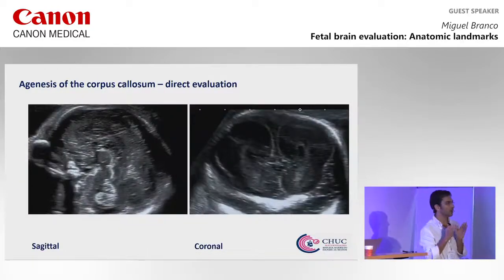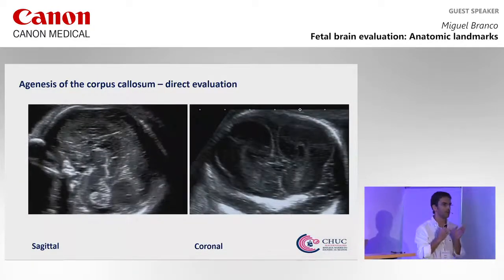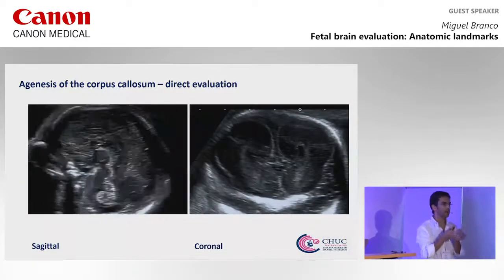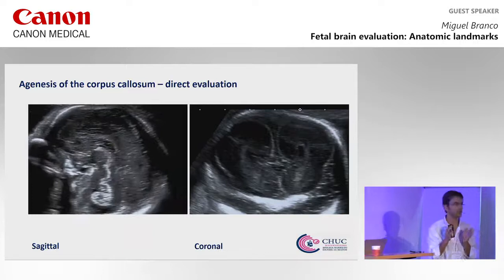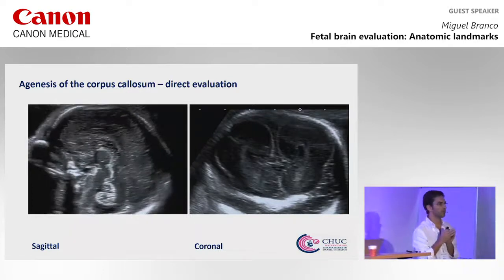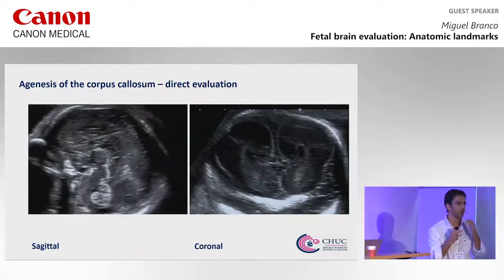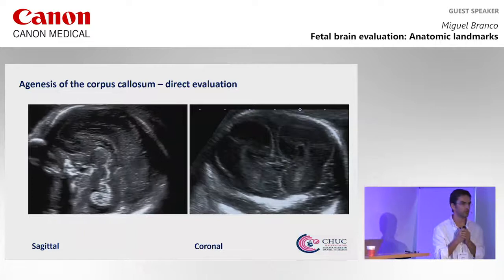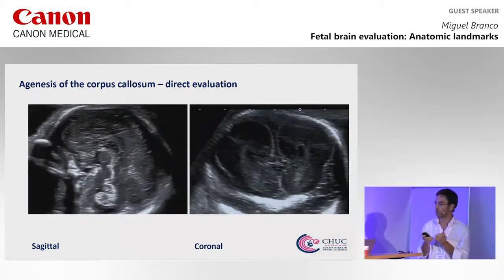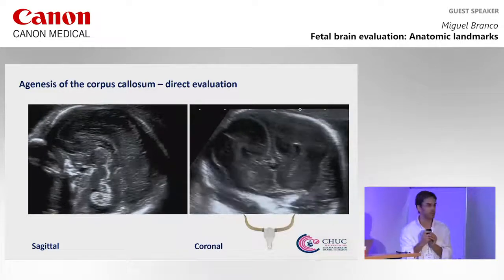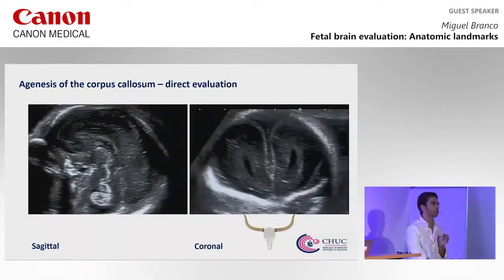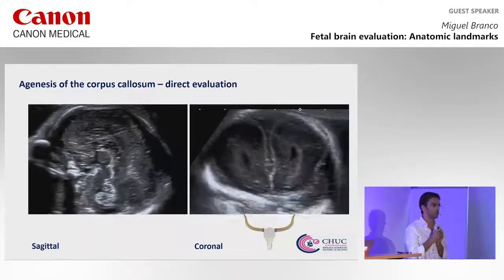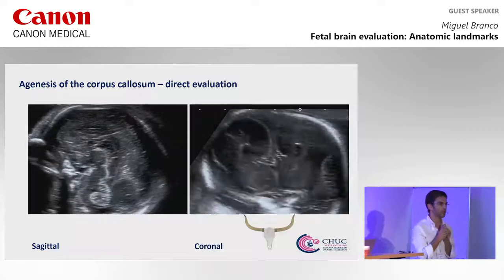However, the diagnosis relies on the identification of its absence on sagittal and coronal planes. On sagittal planes we are not able to identify the cavum nor the corpus callosum, and in coronal planes we can see that the interhemispheric fissure runs down to the third ventricle without any kind of interruption.